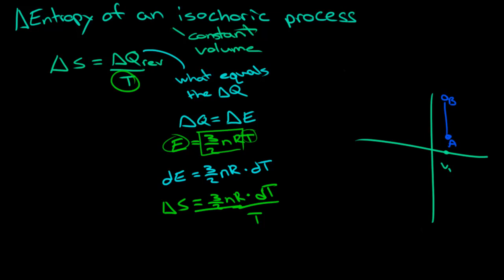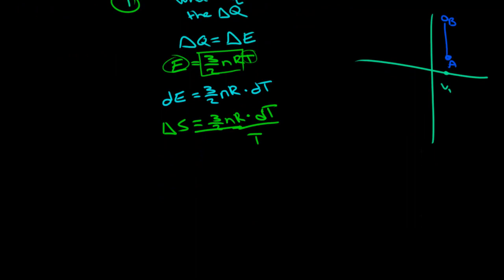Now, what we can do is we can integrate this quite simply. The change in entropy is equal to 3 over 2 nR times, and for here, all we have to do then is go the natural log of T2 divided by T1.